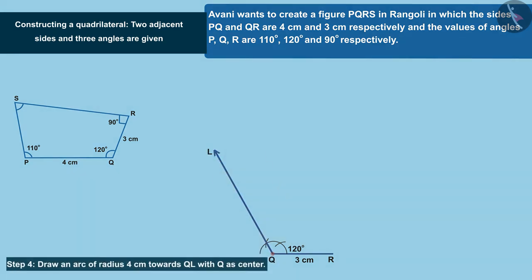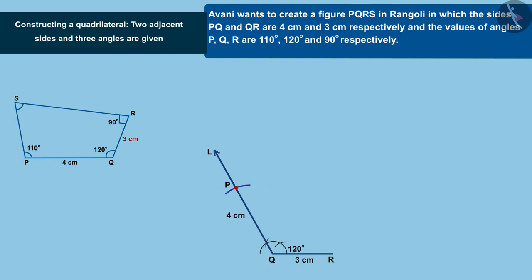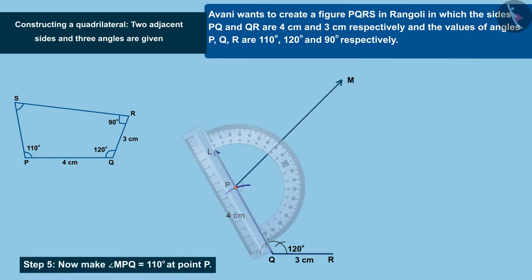Draw an arc of radius 4cm towards QL with Q as centre. Name the intersection of arc and QL as P. Now make angle MPQ equal to 110 degrees at point P.